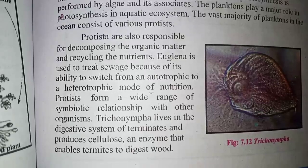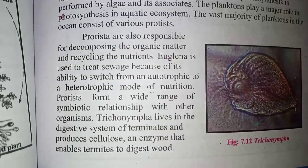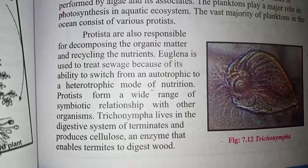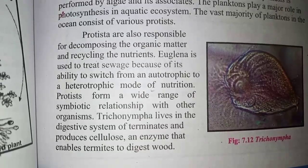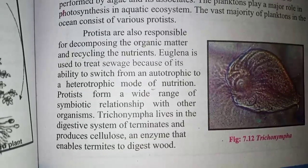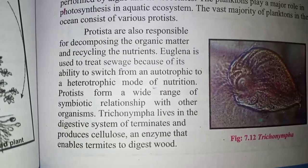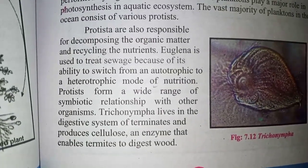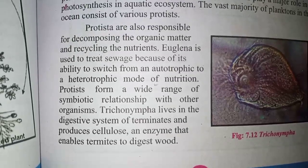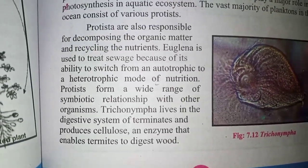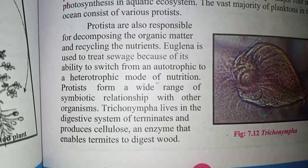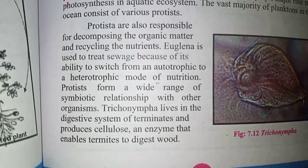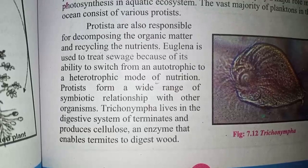Euglena is used to treat sewage because of its ability to switch from an autotrophic to a heterotrophic mode of nutrition. Protists also form a wide range of symbiotic relationships with other organisms.